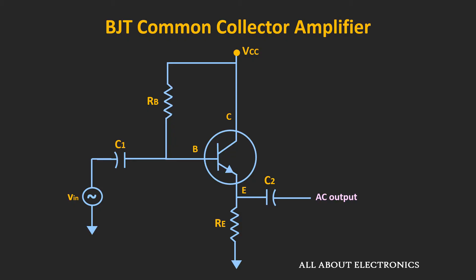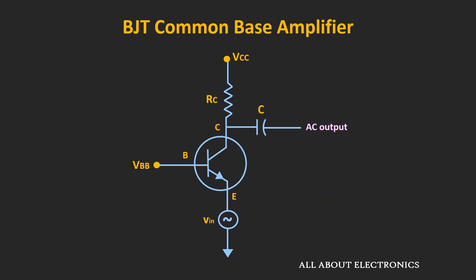Without directly jumping on the actual circuit of the Common Base Amplifier, let me start with the very elementary circuit and then step by step we will see the actual circuit. This is the very basic circuit of the Common Base Amplifier. Here, this AC input signal is applied at the emitter terminal, while the output is measured at the collector terminal.